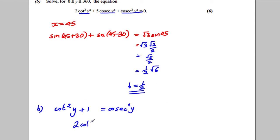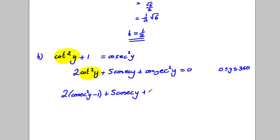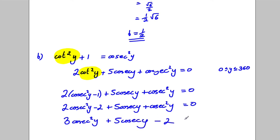So if I'm trying to solve 2 cot squared y plus 5 cosec y plus cosec squared y equals 0 for y between 0 and 360, I'm going to replace this cot squared by cosec squared y subtract 1. So I'm going to write that 2 cosec squared y subtract 1, add 5 cosec y plus cosec squared y is equal to 0. Expanding this out, 2 cosec squared y subtract 2, add 5 cosec y, add cosec squared y is equal to 0. Combining the cosec squareds, I would get 3 cosec squared y add 5 cosec y subtract 2 is equal to 0.